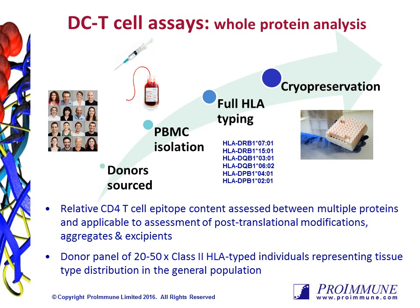Proimmune offers an integrated, best-in-class assay platform that allows you to evaluate the potential for immunogenicity risk specific to your program needs. For example, if there are multiple biologic candidates in the pipeline, the ProCern DC T-cell proliferation assay can be used to rank the candidates during the lead selection phase. The assay helps to identify the presence or absence of potential T-cell epitopes within proteins, and is designed to develop a picture of relative antigenicity between structurally similar molecules comparable in their application, formulation, mode of action, and route of exposure. It is a highly sensitive assay that can also be used to assess post-translational modifications, aggregates, and excipients.